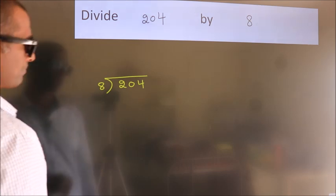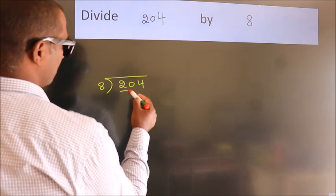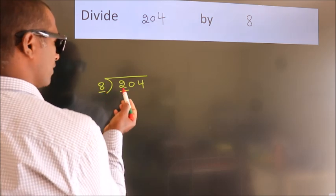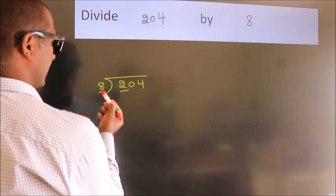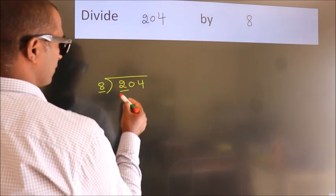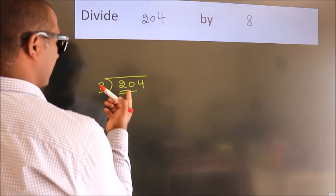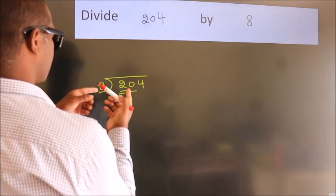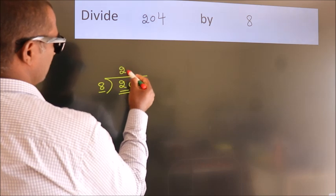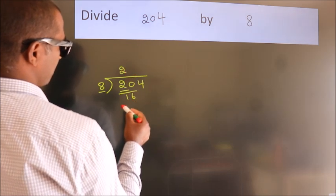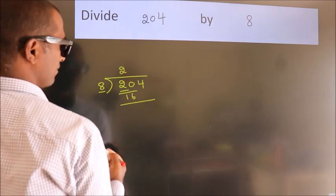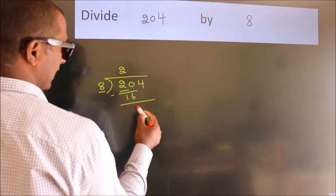Next, here we have 2. Here, 8. 2 is smaller than 8, so we should take 2 numbers: 20. A number close to 20 in the 8 table is 8 times 2, 16. Now we subtract. We get 4.